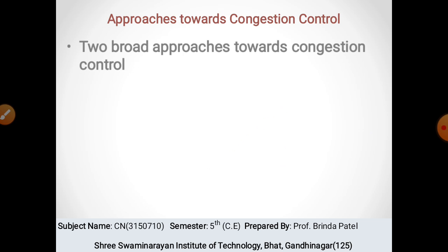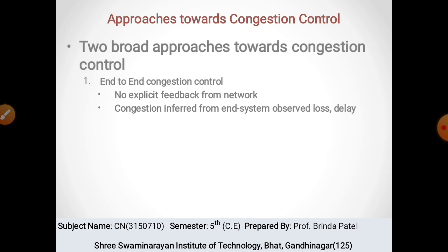There are two broad approaches to congestion control. The first is end-to-end congestion control, which covers the sending side and receiving side. There is no explicit feedback from the network. Congestion is inferred from end systems which observe loss or delay. This approach is taken by TCP — the TCP mechanism is used to control the end-to-end congestion cost.